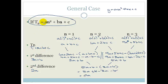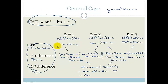Here a is the coefficient of n squared, b is the coefficient of n, and c is the constant. That sounds really complicated, but the reason I've proved this is because we're going to use it. I hated it when my teacher would just say 'use this' without explaining it. Now I've shown you that the second difference equals 2a, the first difference is 3a plus b, and the first term is a plus b plus c.